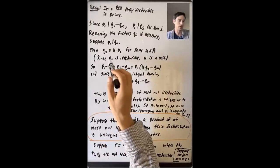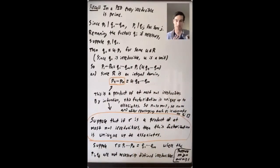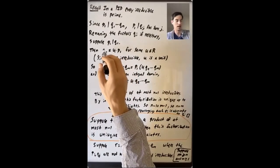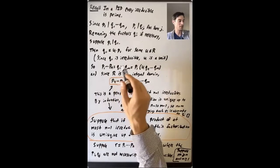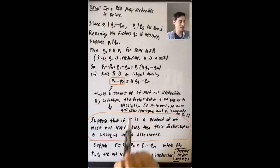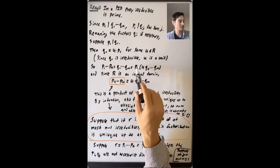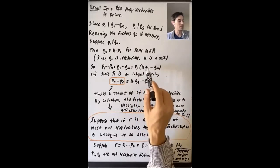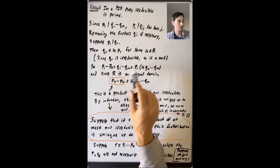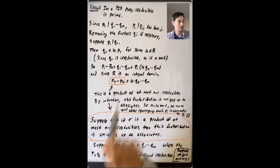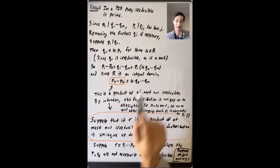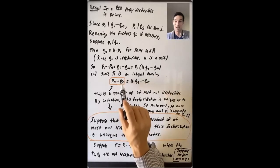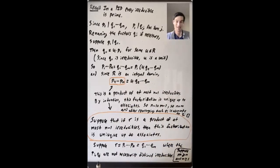Suppose p1 divides q1, so q1 equals p1 times u for some u. Since q1 is irreducible, u is a unit. So q1 equals u times p1. Now p1 times ... times pn equals q1 times ... times qm, and since q1 is u times p1, we pull out p1 and write this as p1 times (u times q2 through qm). Since R is an integral domain, we cancel the p1s: p2 times ... times pn equals u times q2 times ... times qm.